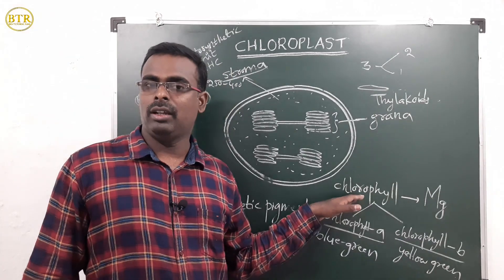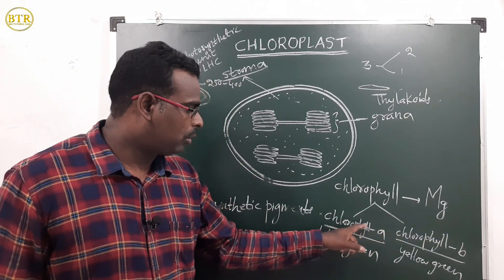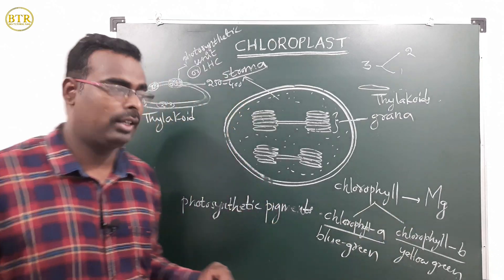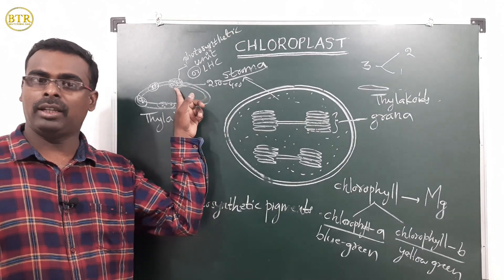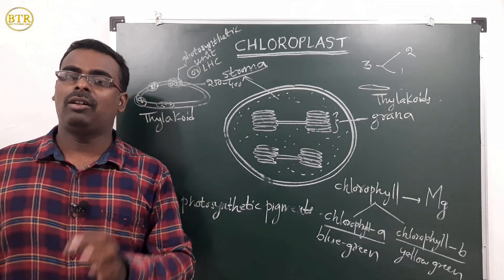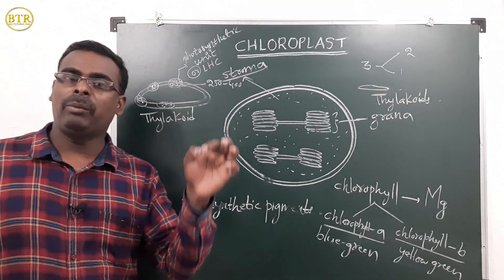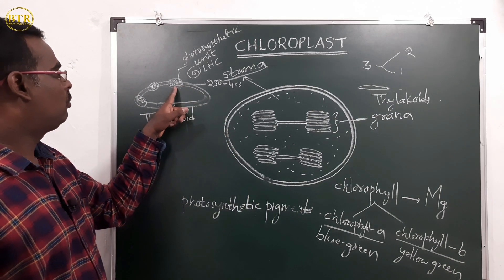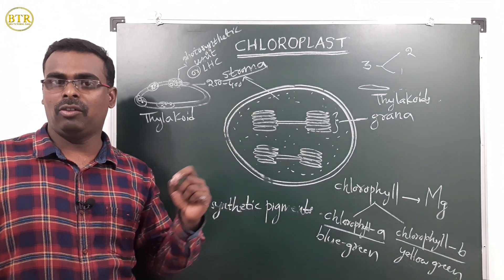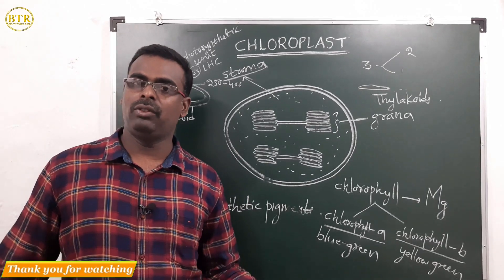Chlorophyll is of two types: chlorophyll A (blue-green color) and chlorophyll B (yellow-green color). Many pigment molecules are grouped together to form a photosynthetic unit, also called a light harvesting complex. Many such complexes are found in the membrane of the thylakoid. In one photosynthetic unit, there are 250 to 400 pigment molecules, which work together to carry out photosynthesis.